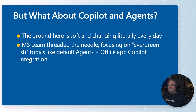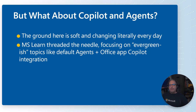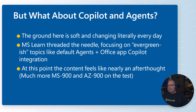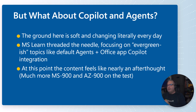Because of the volatility of the tech, it looks like they threaded the needle — focusing on the stuff least likely to change, like the basic mechanics of interacting with Copilot in your apps like Excel, whether you'd want to use the Python analysis engine, and basic stuff about the agent gallery and using pre-built agents like the Analyst and the Researcher. Know about those. But the Copilot and agent content is very, very thin. It feels like an afterthought — much more of an MS900 and AZ900 flavor on this test. That's reflective of two things: it's still beta and subject to change, and the Copilot and agent world is just intensely volatile.